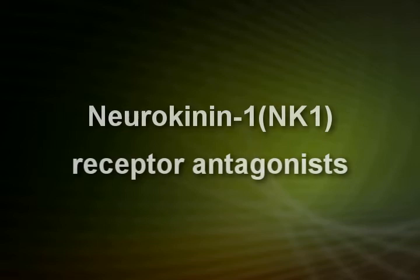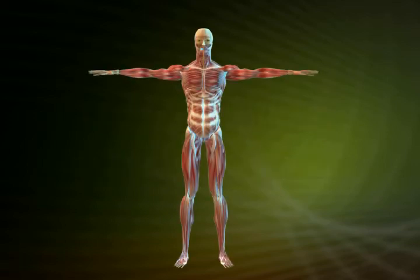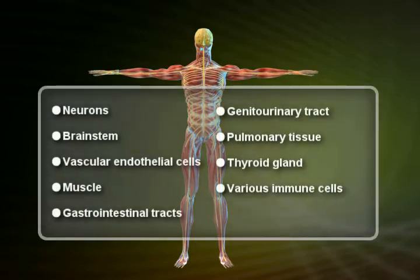Also known as the tachykinin receptor, NK1 receptors are G-protein coupled receptors found in the central nervous system and peripheral nervous system. It is present in neurons, brain stem, vascular endothelial cells, muscle, gastrointestinal tracts, genitourinary tract, pulmonary tissue, thyroid gland, and different types of immune cells.